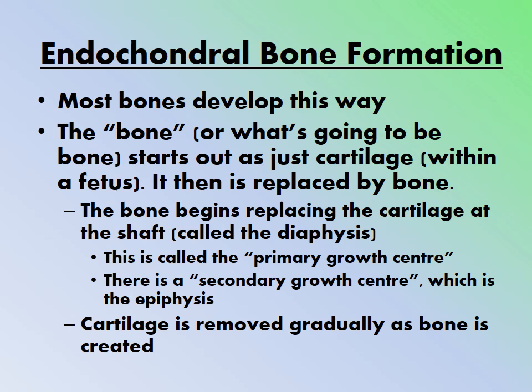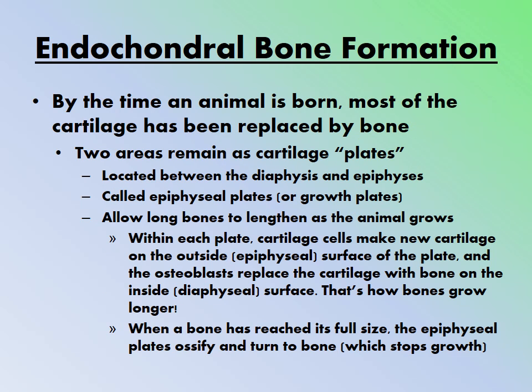Cartilage is gradually removed as bone is created, so by birth most cartilage has been replaced. Two areas remain as cartilage plates — located between the diaphysis and the epiphysis — called epiphyseal plates or growth plates. These allow a puppy's femur to grow into a large adult femur. Even though bone is mostly ossified at birth, the growth plates remain and allow long bones to lengthen as the animal grows.